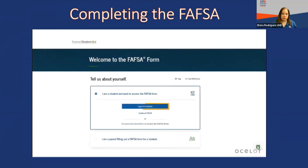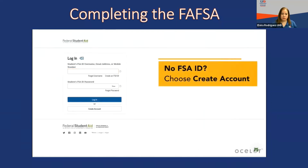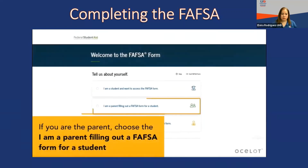If you are the student, choose 'I am a student and want to access the FAFSA form' and click 'Login' to continue. You may also choose to begin the FAFSA form with your personal identifiers: first name, last name, date of birth, and social security number. Enter your FSA ID username, verified email address, or mobile number and password. If you do not have an FSA ID, you will need to create one using the 'Create Account' option. If you are the parent, choose 'I am a parent filling out a FAFSA form for a student' and enter personal information for the student.